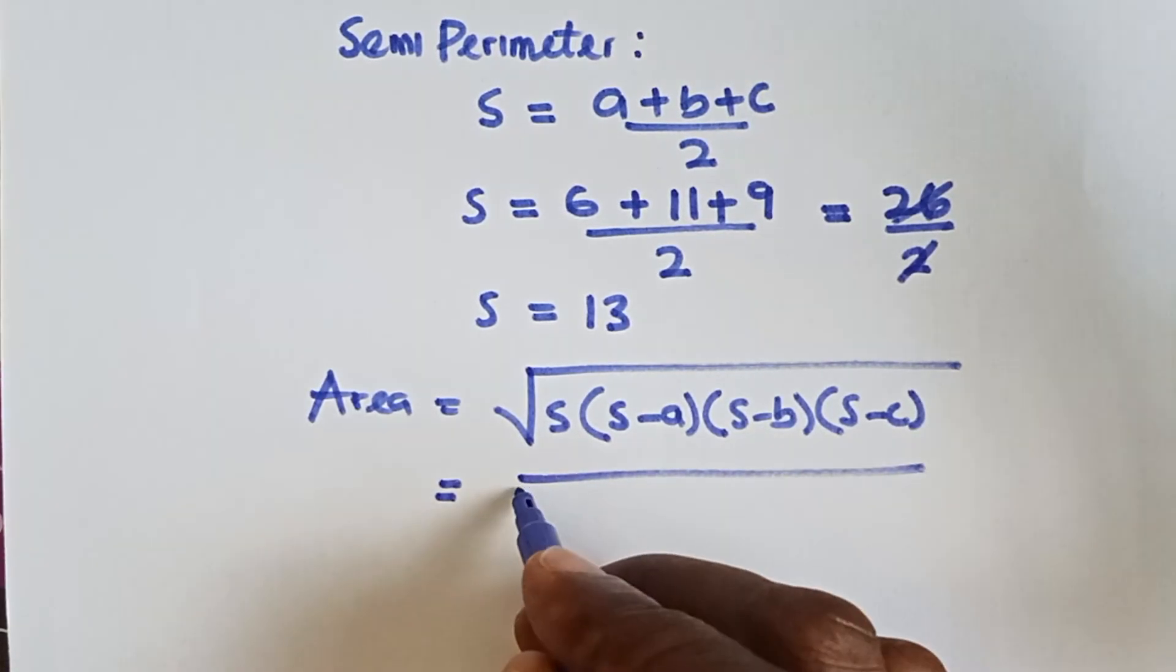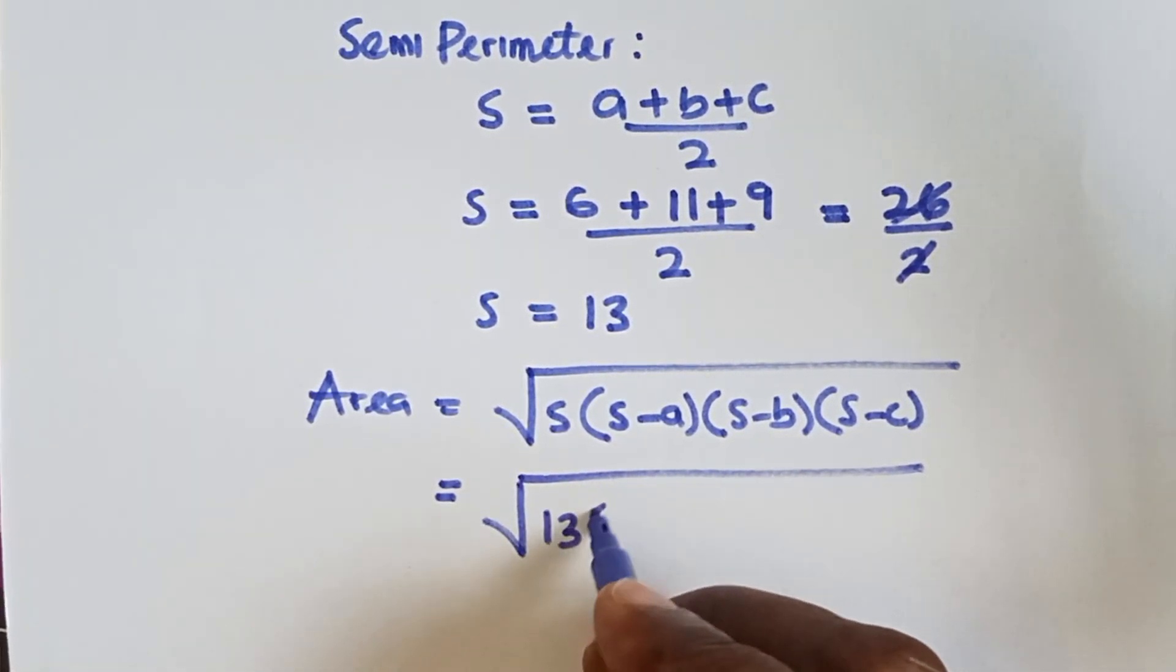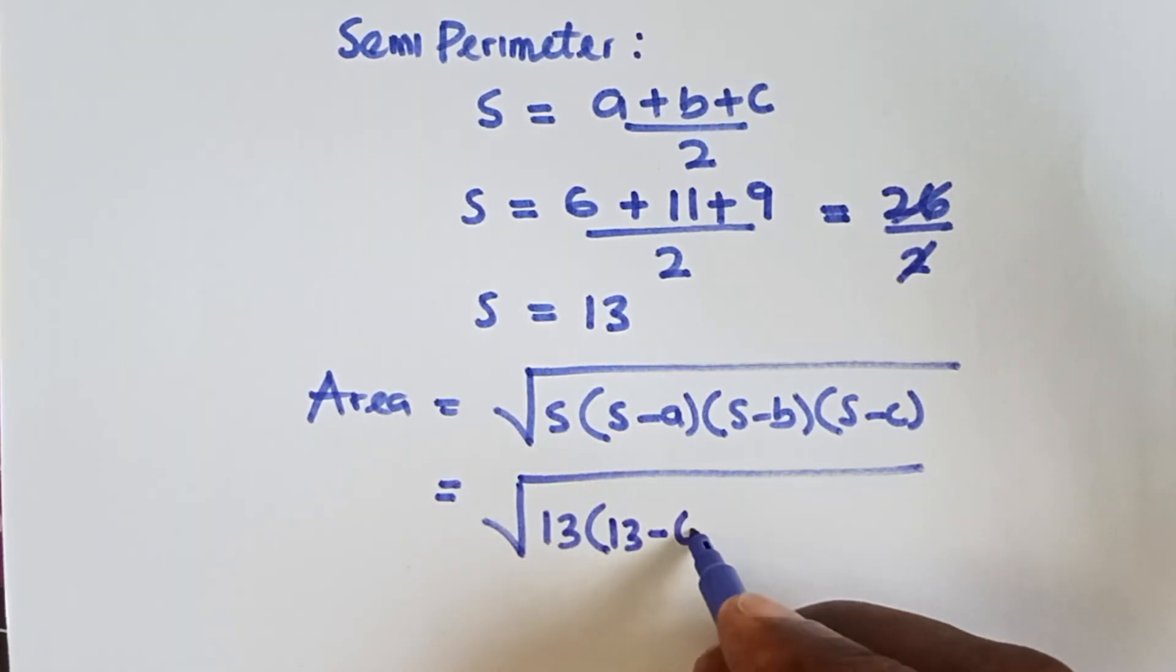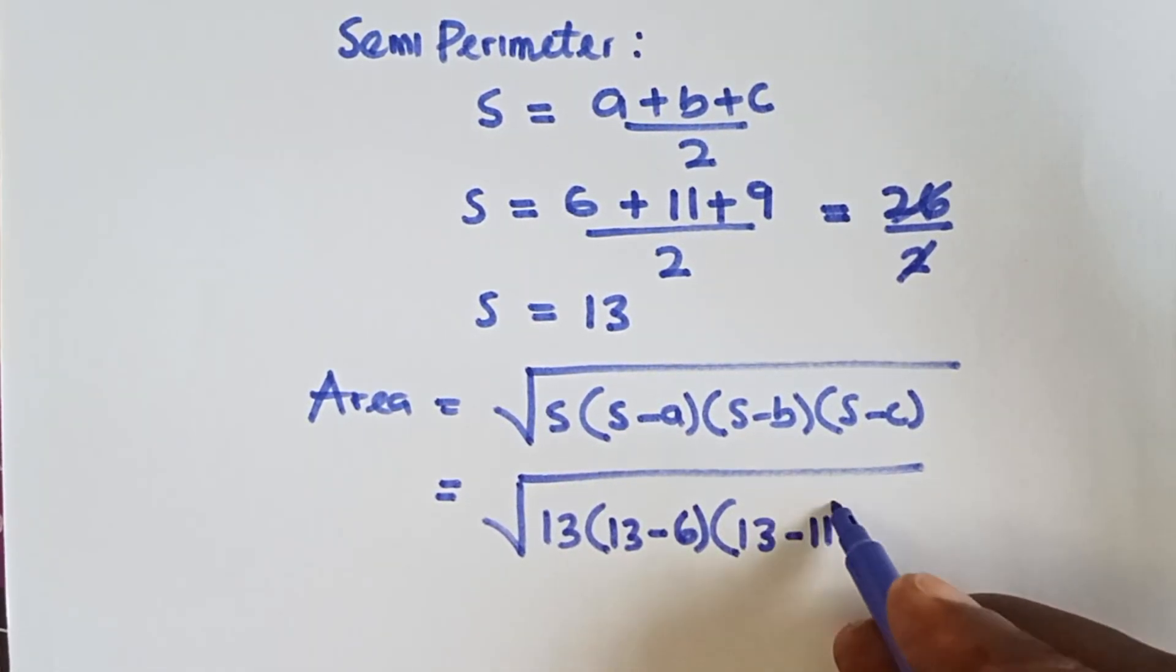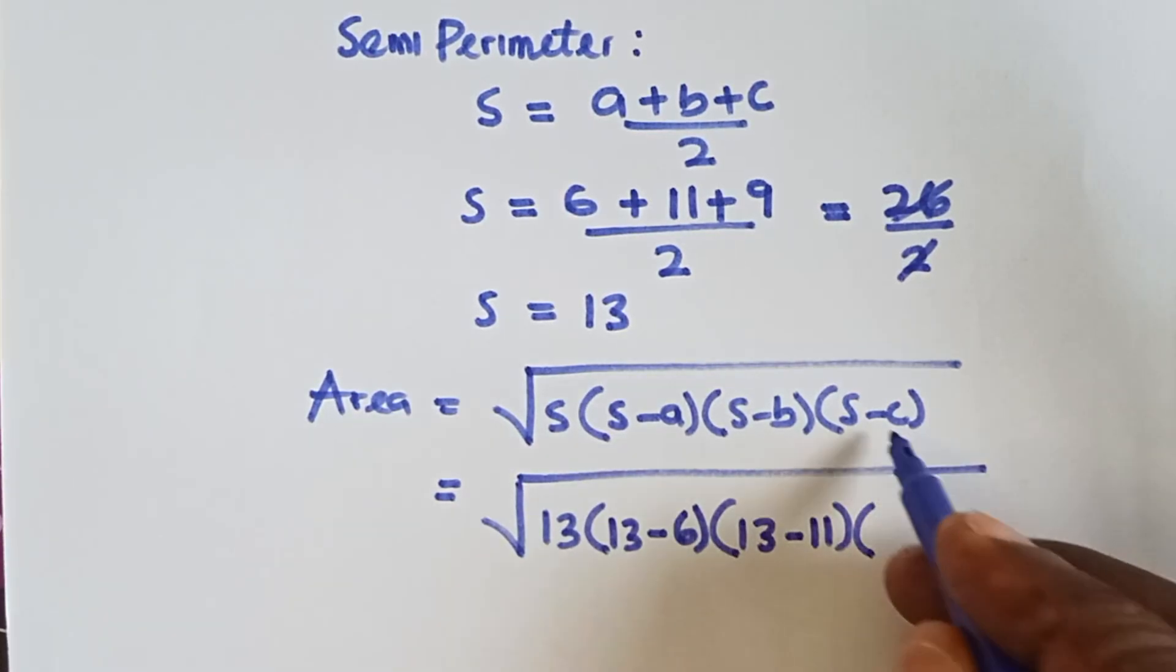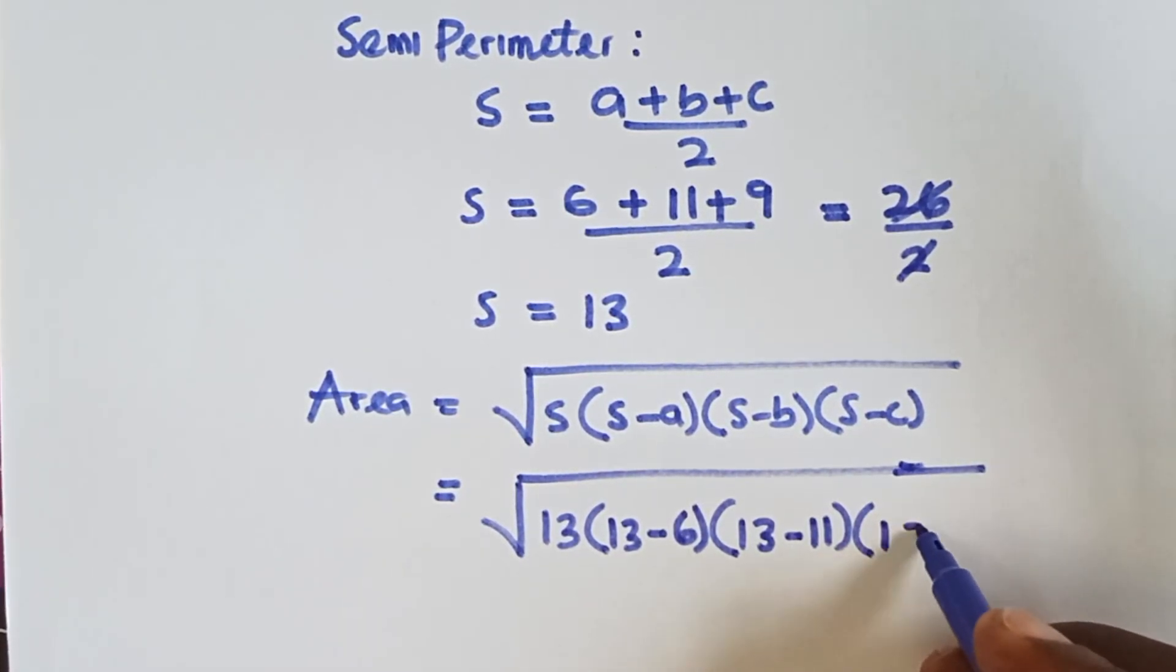So we do that. What is our s? Our s is 13 multiplying (13 minus a is 6), (s is 13 minus b is 11), and (s is 13 minus c is 9).